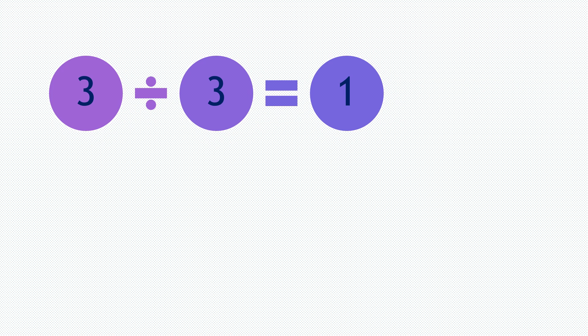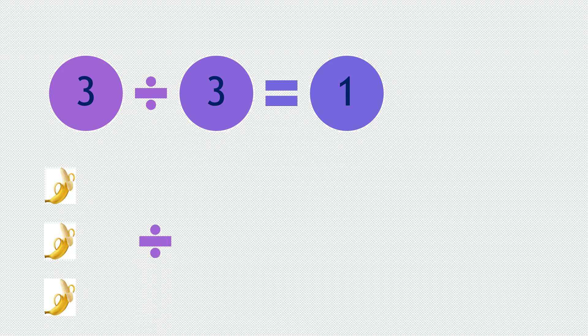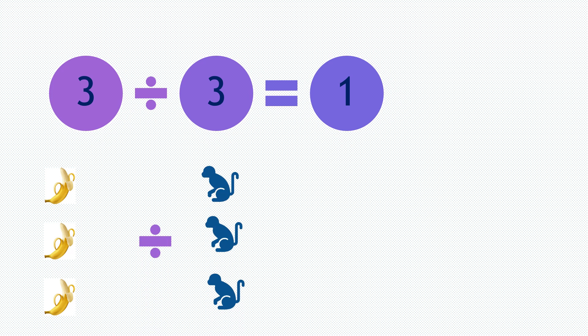Let's start. 3 divided by 3 equals 1. So if you have 3 bananas — 1, 2, 3 — and divided by 3 monkeys, each monkey will have 1 banana.